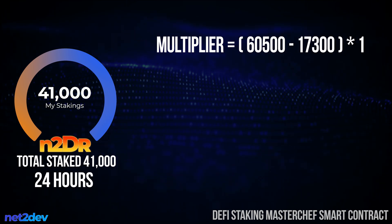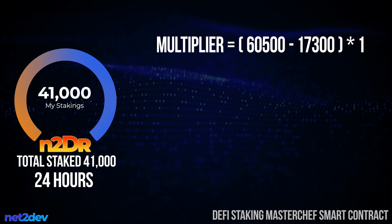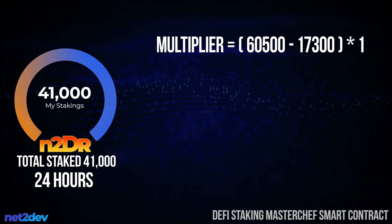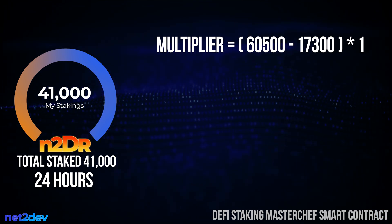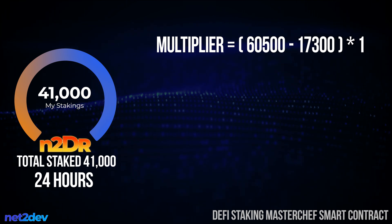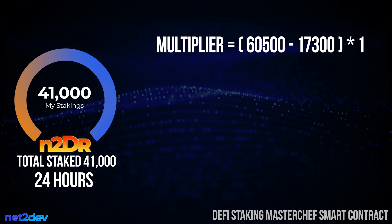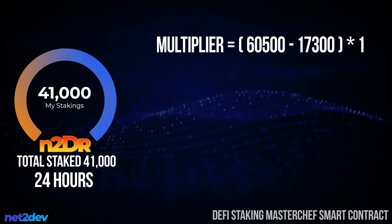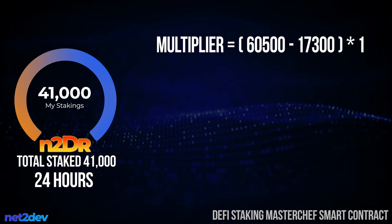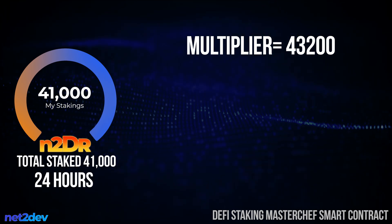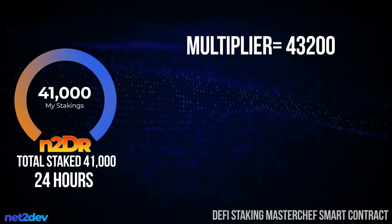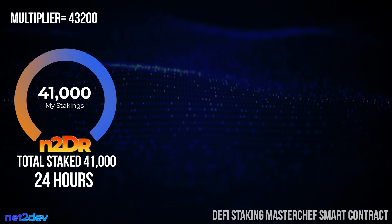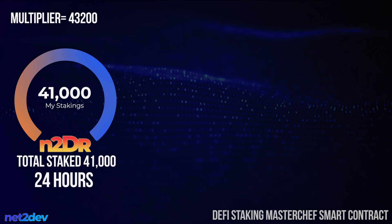I unstaked at block number 60,500 and initially staked at block number 17,300. Subtracting those two block numbers gives the number of blocks during the 24-hour staking period. Multiplying by the bonus of 1, we end up with a multiplier value of 43,200 — the number of blocks generated in 24 hours. We'll set this value aside because we will use it in the next formula: pool reward.